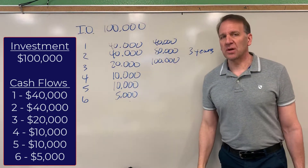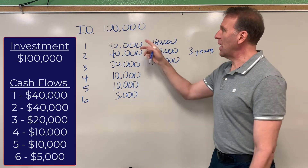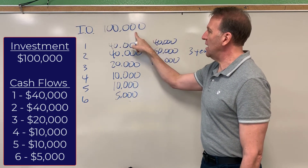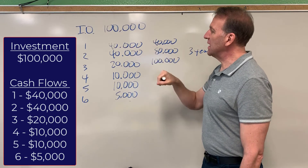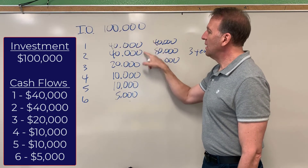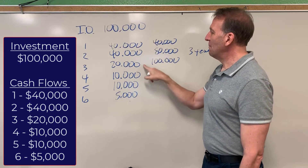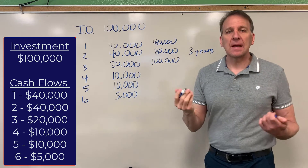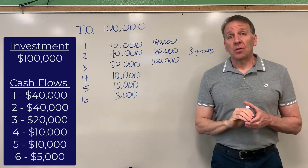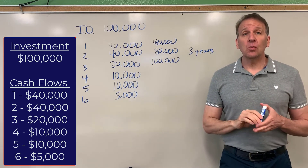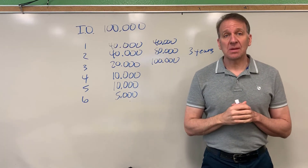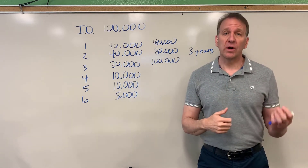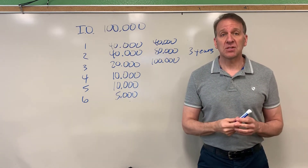A lot of textbooks approach this by subtracting: take $100,000 minus $40,000 gets you to $60,000, minus $40,000 gets you to $20,000, minus $20,000 gets you to zero. This is the same thing. Those are the two ways to calculate the payback period with even or uneven cash flows.